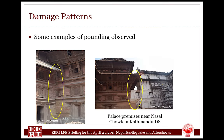Rare but few examples of pounding effect were also observed in our visit. The picture shows the inside of palace premises near Nasal Chok in Kathmandu Darbar Square where the hammering effect of Gaddi Baitak, the neoclassical European-style building, and the roofs of the nine-storied Basantapur Tower is clearly seen. Similarly, the block housing Kirtipur Tower of Lohan Chok got pounded with the block housing Basantapur Tower of Nasal Chok, as can be seen in the second picture.